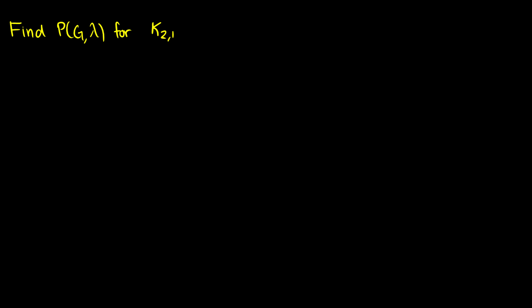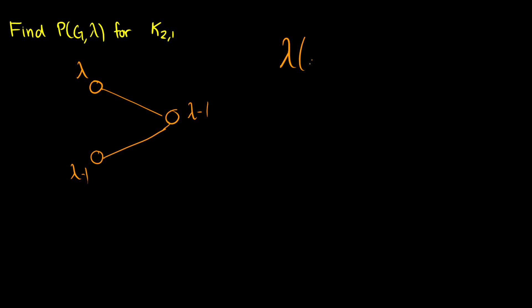What about the bipartite graph K_{2,1}? Drawing it out, this is really just a path of length three. Color the first vertex lambda ways, the second can't match it so lambda minus one, and the third also lambda minus one. So the chromatic polynomial is lambda times (lambda minus one) squared.